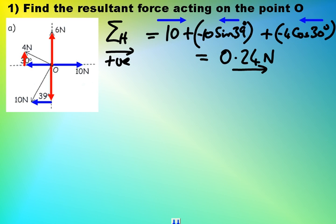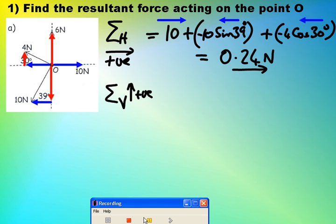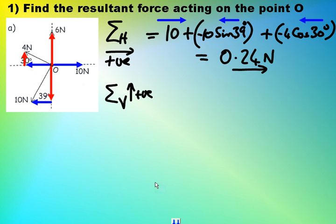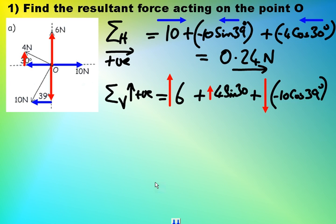Then we do the same thing for the vertical forces, summing up all the vertical forces. Okay, so vertical forces being summed up look like this. We've got the six and we've got the four sine 30 and we've got the ten cos 39. Because the six and the four sine 30—these two both point up—they get both positive signs.